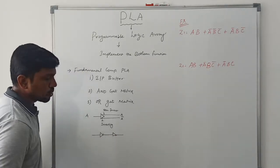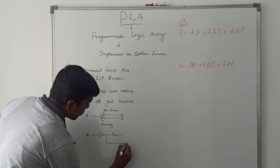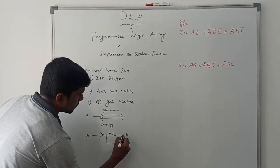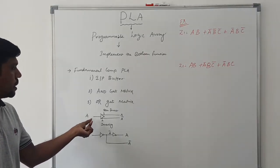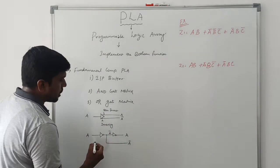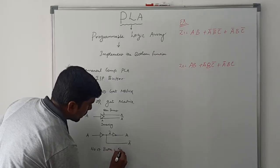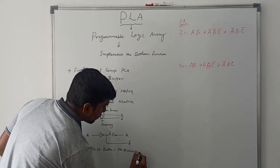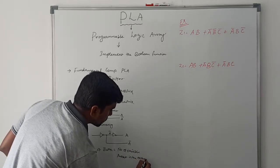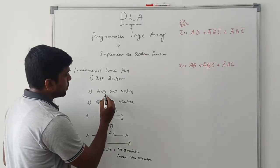The simplified structure of the input buffer uses two inverters. A is the input; the output of the first inverter is A bar, and A bar is the input of the second inverter, whose output is A. The number of input buffers required equals the number of variables present in the expression.